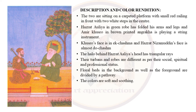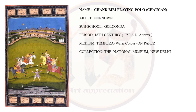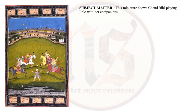The second painting from our syllabus is Chand Bibi Playing Polo (Chogan) — artist unknown, sub-school Golkonda, period 18th century (approximately 1750), medium tempera (watercolor on paper), collection National Museum, New Delhi. This miniature shows Chand Bibi playing polo with her companions. Chand Bibi was a great horse rider and a fine polo player — one of the great historic Indian women who stood up to powerful men. She fought battles with the Mughal forces of Emperor Akbar. She was a sister of Nizam I of Ahmednagar and widow of Ali Adil Shah I, Sultan of Bijapur, making her a favourite subject of Deccan artists.